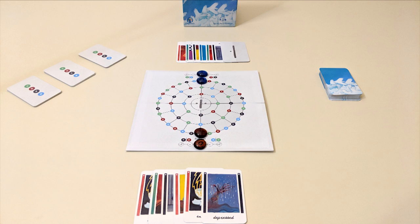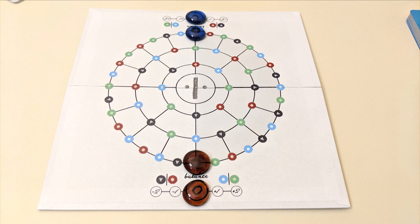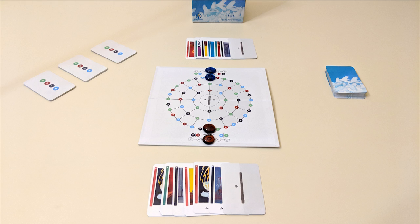Players will start the game with their tokens on opposite sides of the board and a set of six emotion cards each. Your goal is to maneuver your player token in sync with your partner to complete objective cards and eventually reach the center of the board, all without actually talking to each other or discussing strategy out loud. It's kind of a passive-aggressive relationship.